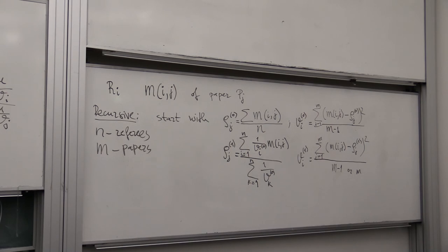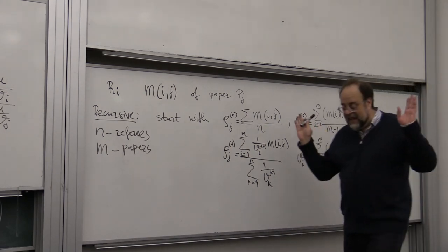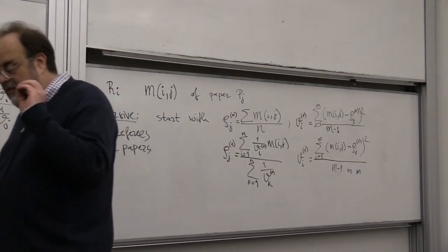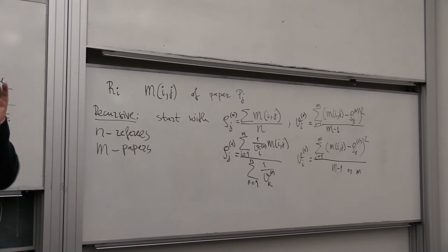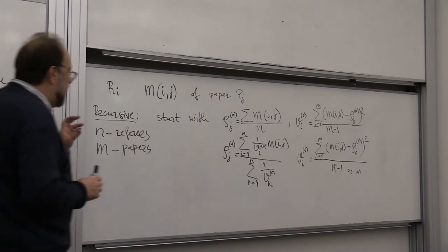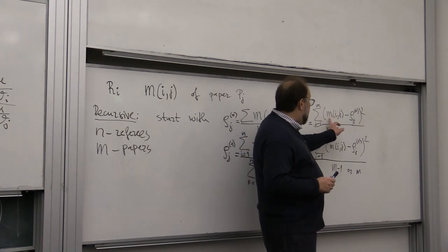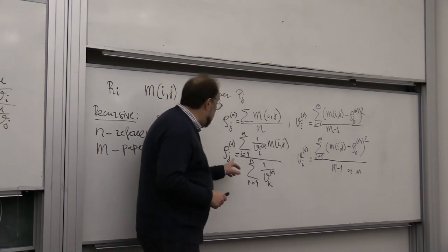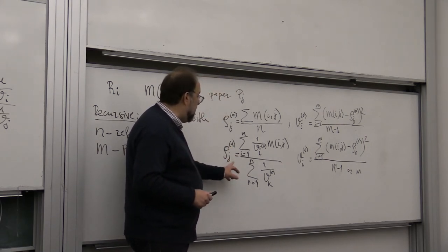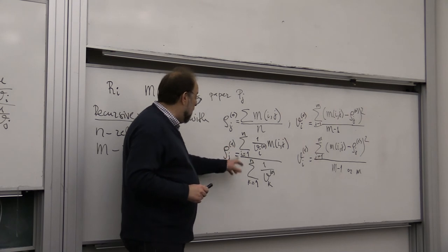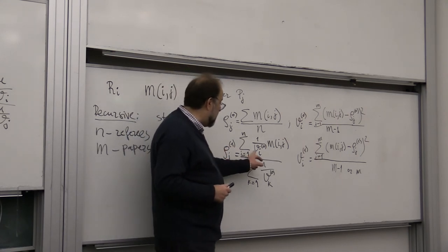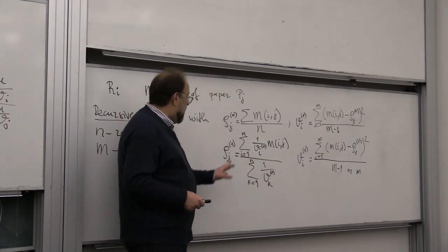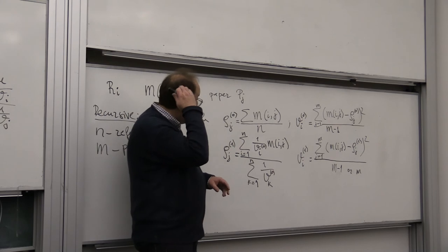It's a very neat idea: first estimate the true values by a simple mean, use this as a temporary gold standard to estimate variances of each referee, then form an approximate maximum likelihood estimation using those approximate variances — which will be more accurate than the simple mean — and continue iterating.